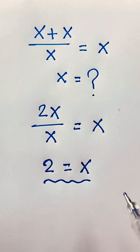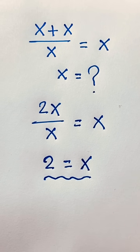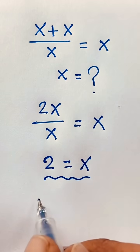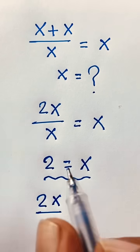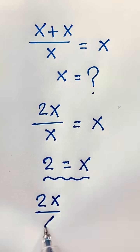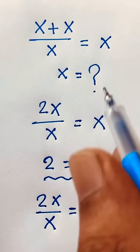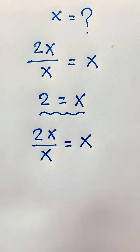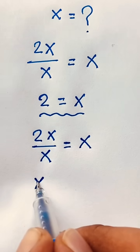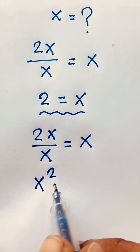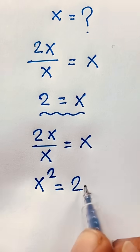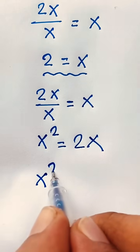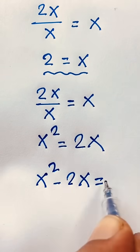But if you solve using this other method: x plus x is 2x, over x is equal to x. Now at this point, x times x will be x squared, which is equal to 2x. So x squared minus 2x is equal to 0.